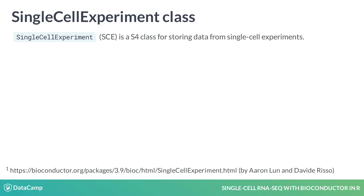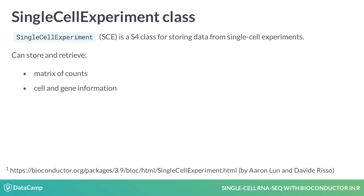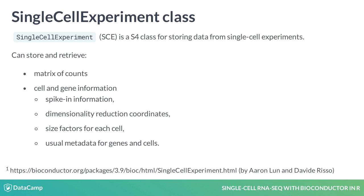It's an S4 class developed by Aaron Lund and David Erisso, and it's very useful to analyze single cell data because it allows you to easily store and retrieve the matrix of counts, but also information about the cells and the genes. You remember the three matrices — one with the row counts and the other two for gene and cell level information I showed you in the previous video. The idea here is that we are going to use only one R object to store these three matrices.